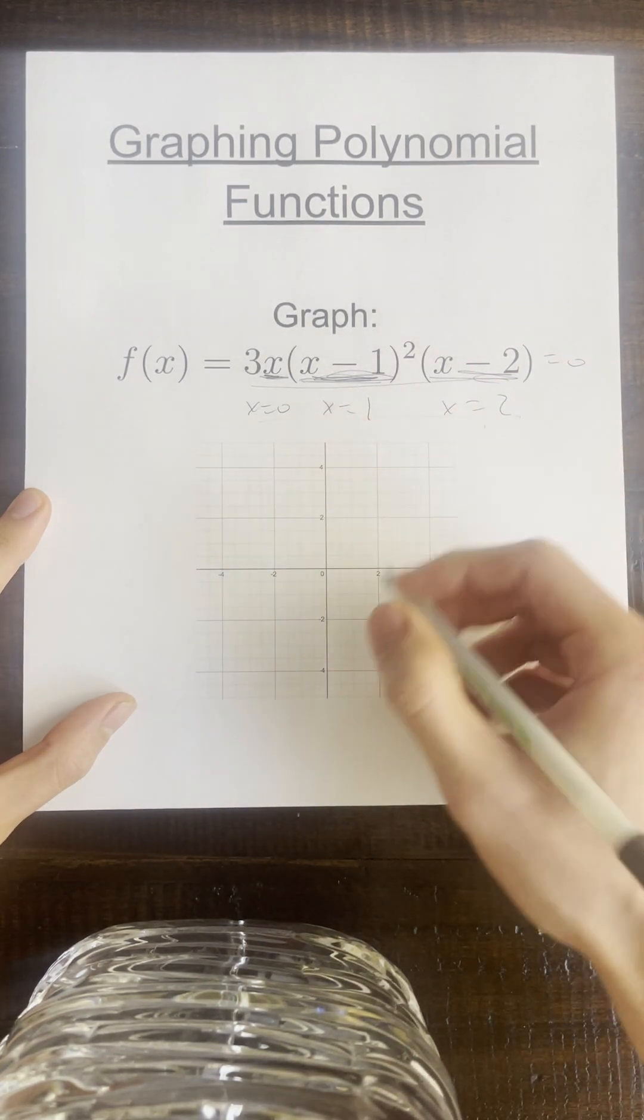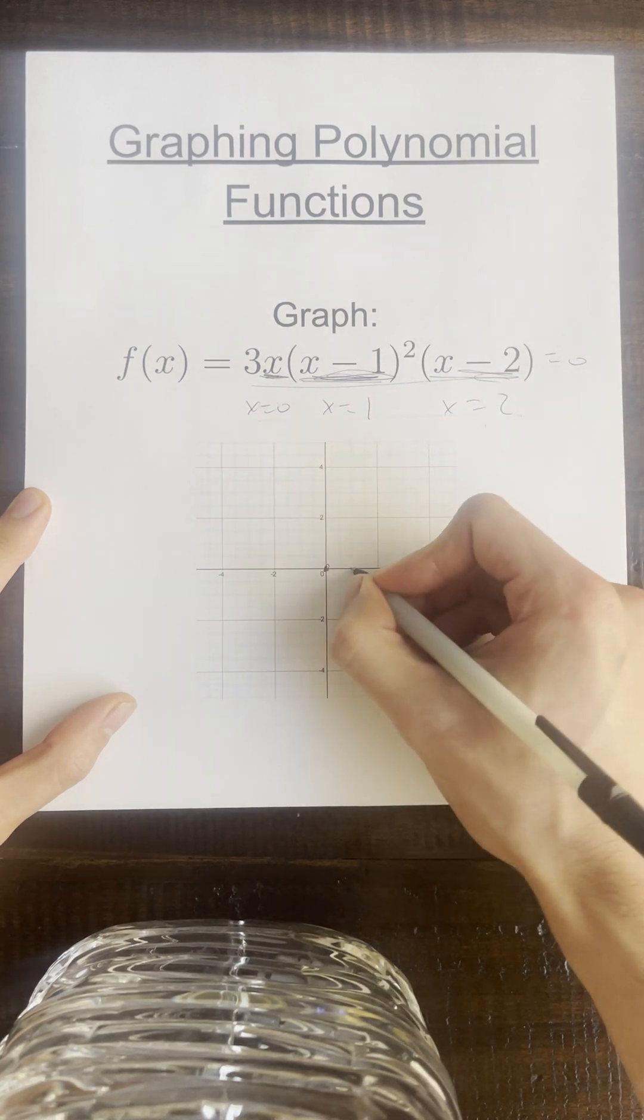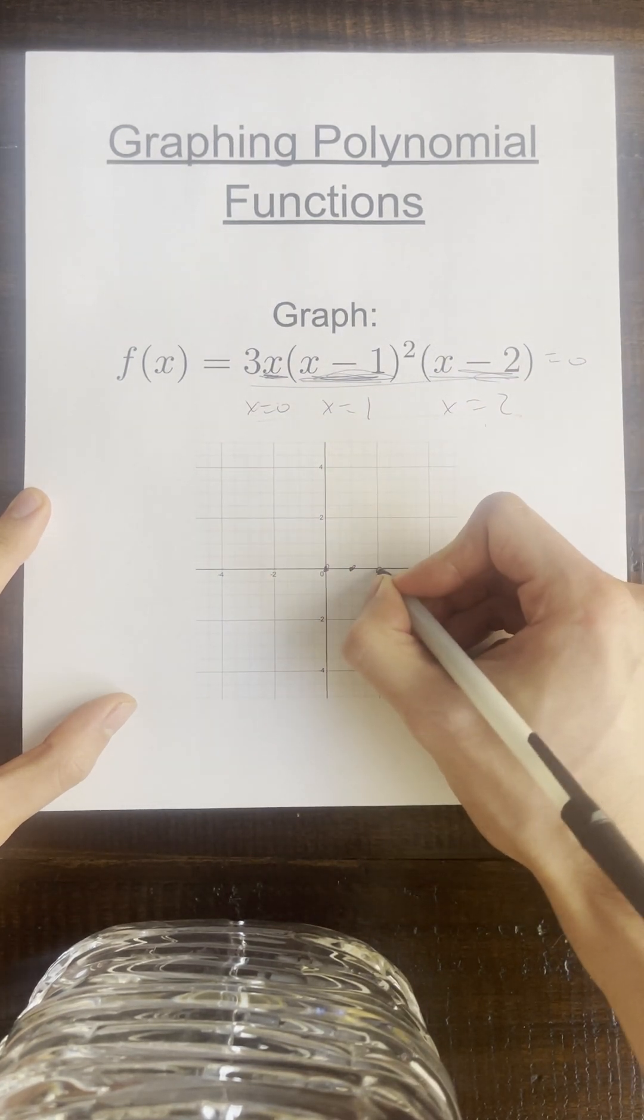Now we're going to plot all these roots. So x is zero, we're going to go here. x is one, we're going to go here. And x is two, is going to go here.